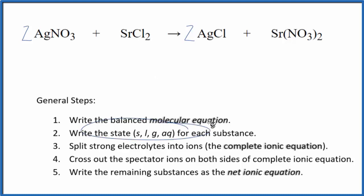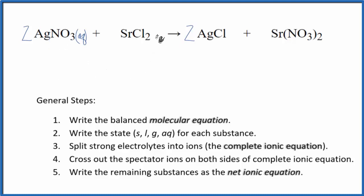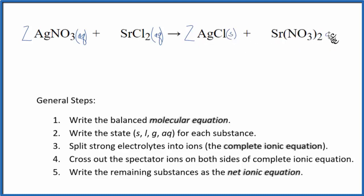Now we need to write the states for each substance. If you know your solubility rules, nitrate is very soluble, so we write AQ — it means it will be aqueous, it will dissolve in water and dissociate into its ions. Chloride is also very soluble, AQ, with a few exceptions. One exception is silver chloride, one you should memorize. Silver chloride is insoluble in water; when you put it in water it won't dissolve, it stays a solid — put a little S after that for solid. And then we have another nitrate here, which is going to be very soluble.